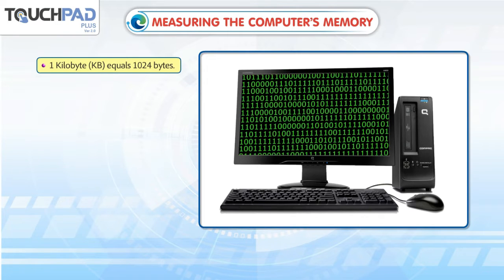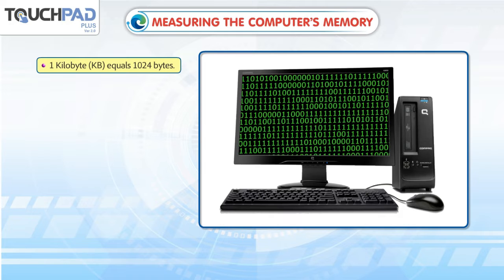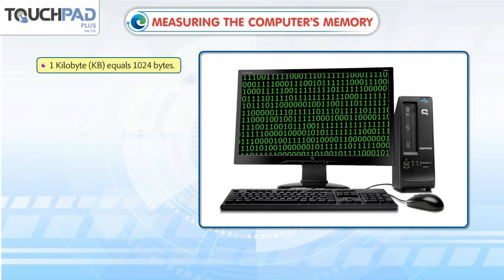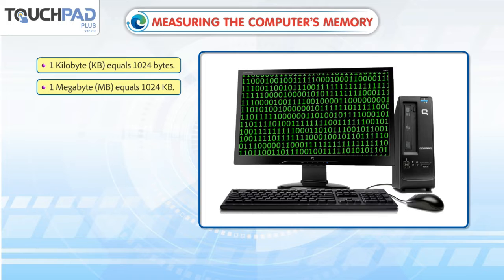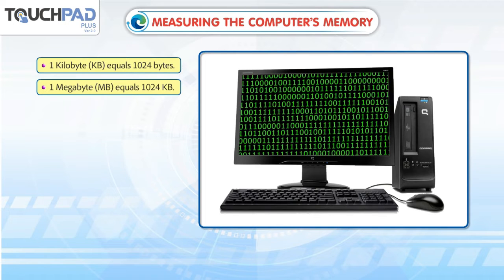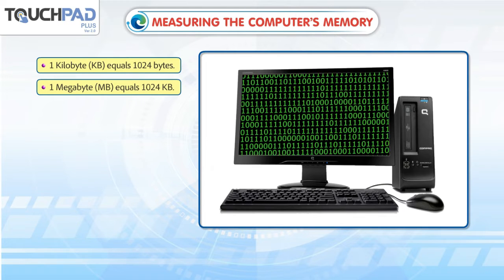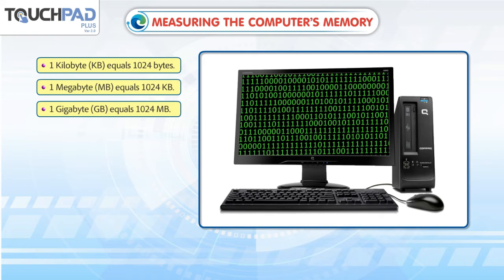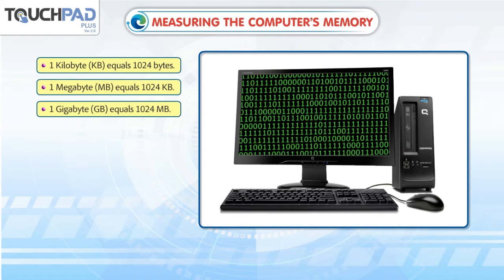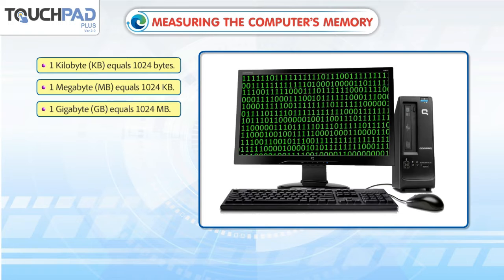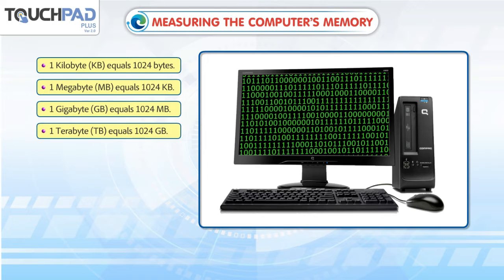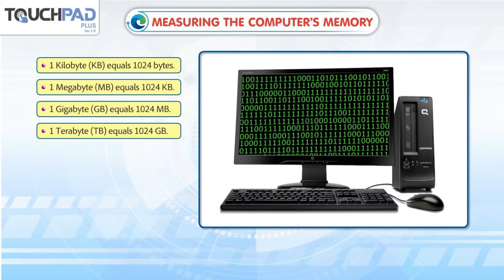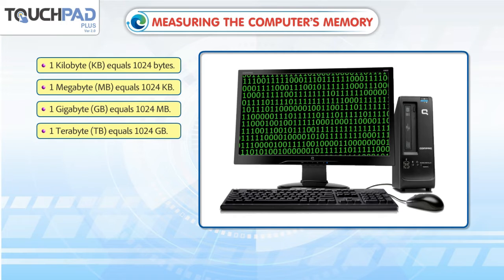1 kilobyte (KB) equals 1024 bytes. 1 megabyte (MB) equals 1024 KB. 1 gigabyte (GB) equals 1024 MB. 1 terabyte (TB) equals 1024 GB.